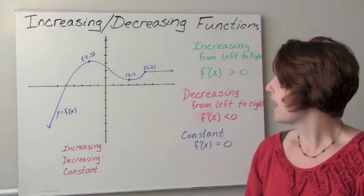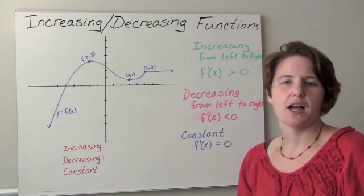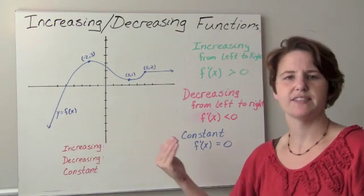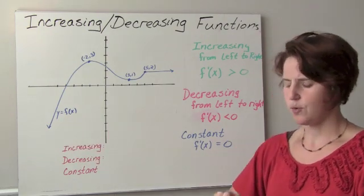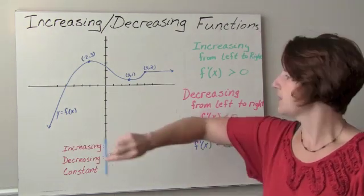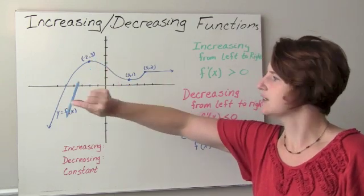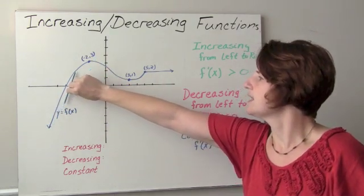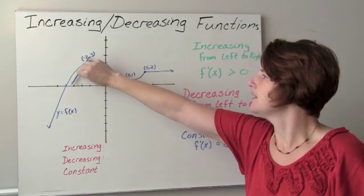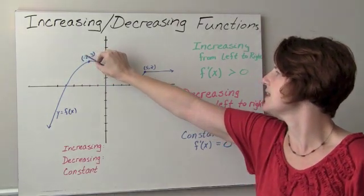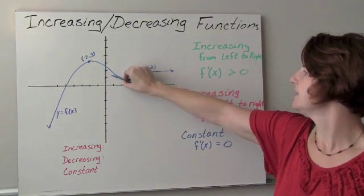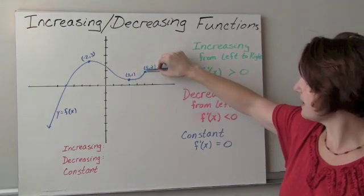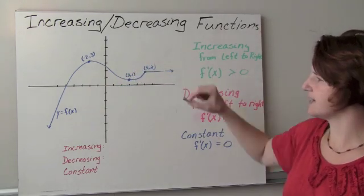Here we have a graph on the board. When we talk about increasing or decreasing, we are thinking about reading from the left side to the right side. I'm going to use this little blue stick to trace along. We are increasing, going up the hill, and then decreasing, increasing a little bit, and then finally the graph levels off and is flat.